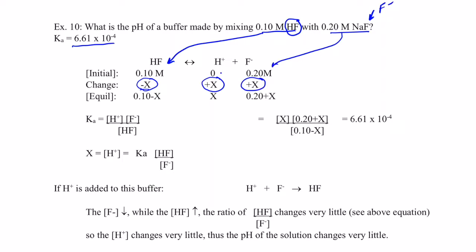So at equilibrium, I will have 0.10 molar minus X of my HF remaining, X of my H plus, and 0.20 plus X of my F negative.